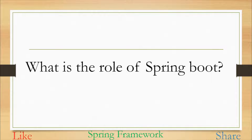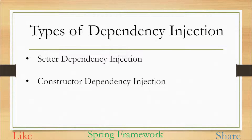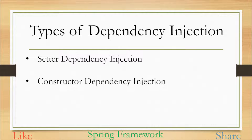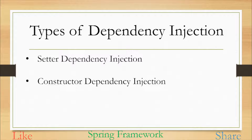Now before we dive into a complete implementation, let's understand the types of Spring Dependency Injection. There are two types: the first one is setter dependency injection and the second is constructor dependency injection. In setter dependency injection, the dependency is injected with the help of setter or getter methods. In constructor dependency injection, it is injected with the help of a constructor, so whatever dependency we want to inject will be part of the constructor parameters.